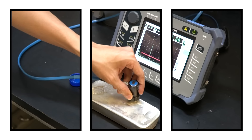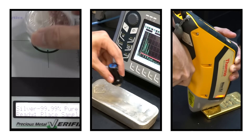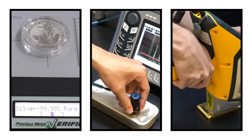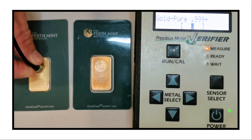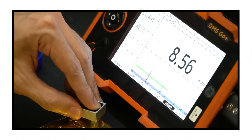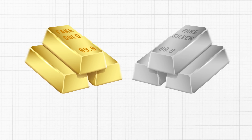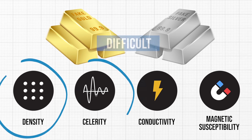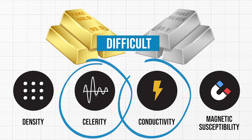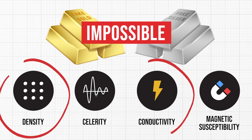The key to reliable non-destructive testing of gold and silver is to combine different methods to reliably weed out counterfeit bullion. Two different types of tests should be sufficient, as long as one of them includes an ECM test or an ultrasound test to actively scan the interior of the sample. This is because it is very difficult to create fake gold and silver of high purity with two similar material properties — such as density, celerity, electrical conductivity, or magnetic susceptibility — perfectly. It is nearly impossible to create fake gold and silver with three similar properties.